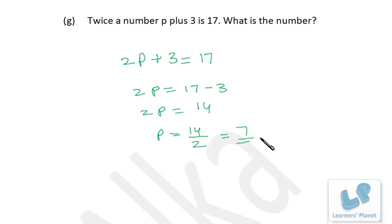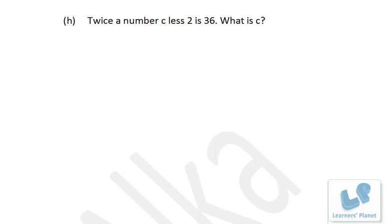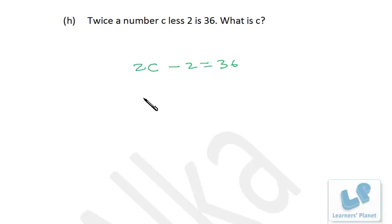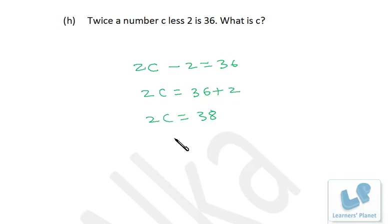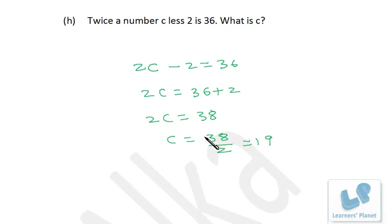Twice a number c less 2 is 36. So 2c minus 2 equals 36. Taking 2 to the other side: 2c equals 36 plus 2, which is 38. So c equals 38 divided by 2, which is 19. If you go step by step, you won't make any mistake.